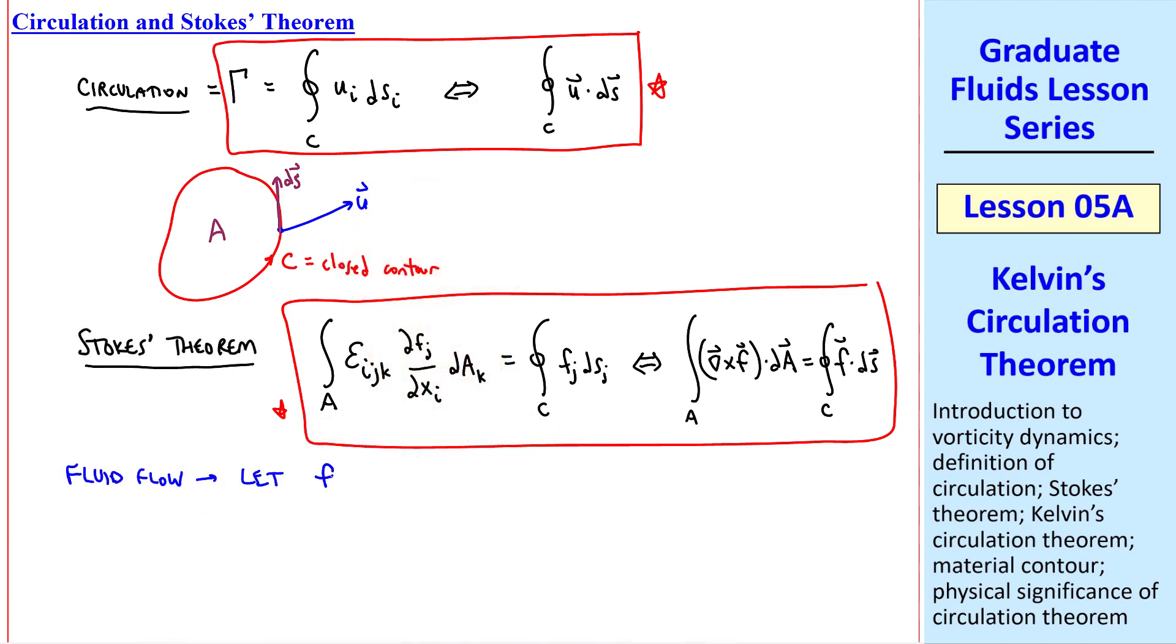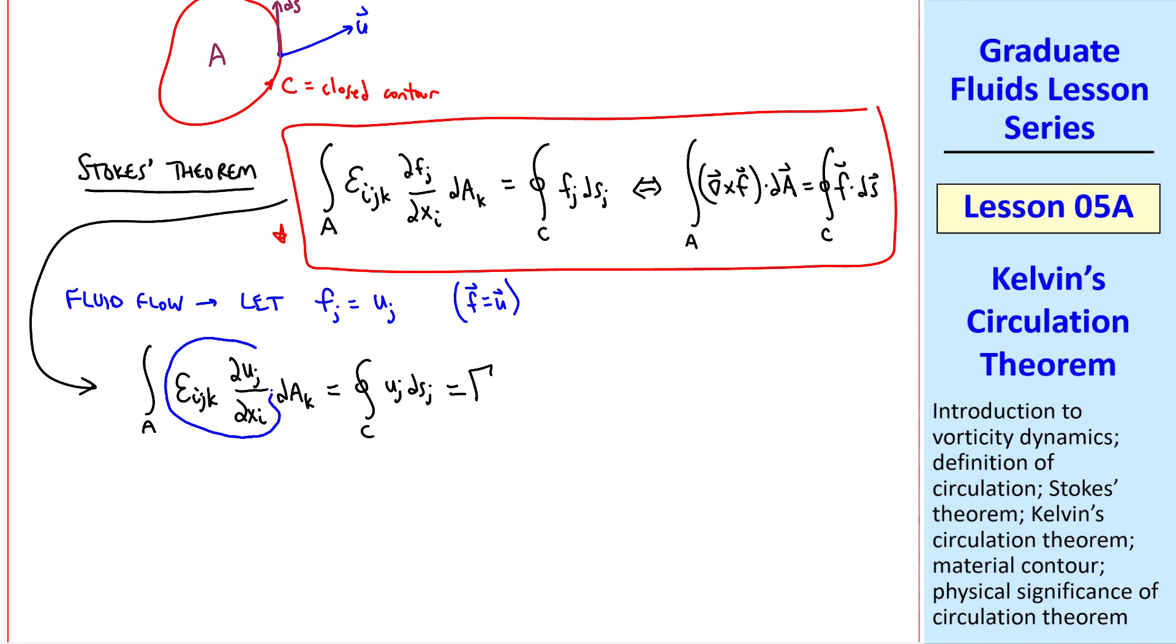In fluid flow, we'll let this f vector be the velocity vector uj. So Stokes' theorem becomes integral of epsilon ijk del uj del xi dak, equal integral around the contour uj dsj. Compare this term to this term, and since i is just a dummy index, we can replace it with j and recognize this as our circulation gamma. On the left-hand side, we recognize this as the vorticity vector omega k. So gamma is also equal to the area integral of omega k dak, or in vector notation, the integral of omega dot dA. This represents an alternate way to calculate gamma, the circulation.